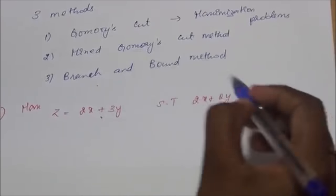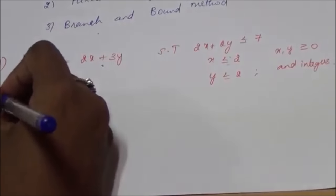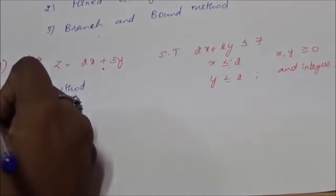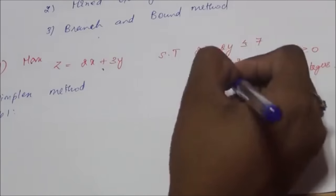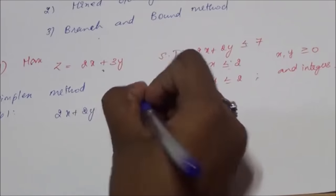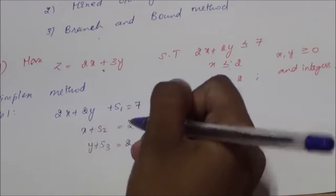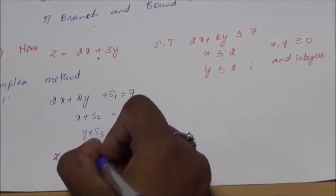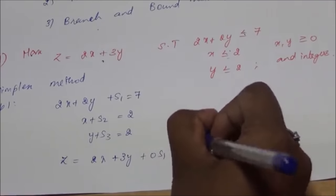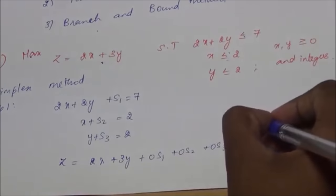Since the given problem is maximization and all the constraints are less than or equal to, we can solve this by the simplex method. First, we add slack variables to all the constraints: 2x + 2y + s1 = 7, x + s2 = 2, y + s3 = 2. The objective function becomes z = 2x + 3y + 0s1 + 0s2 + 0s3, where all variables x, y, s1, s2, s3 are ≥ 0.